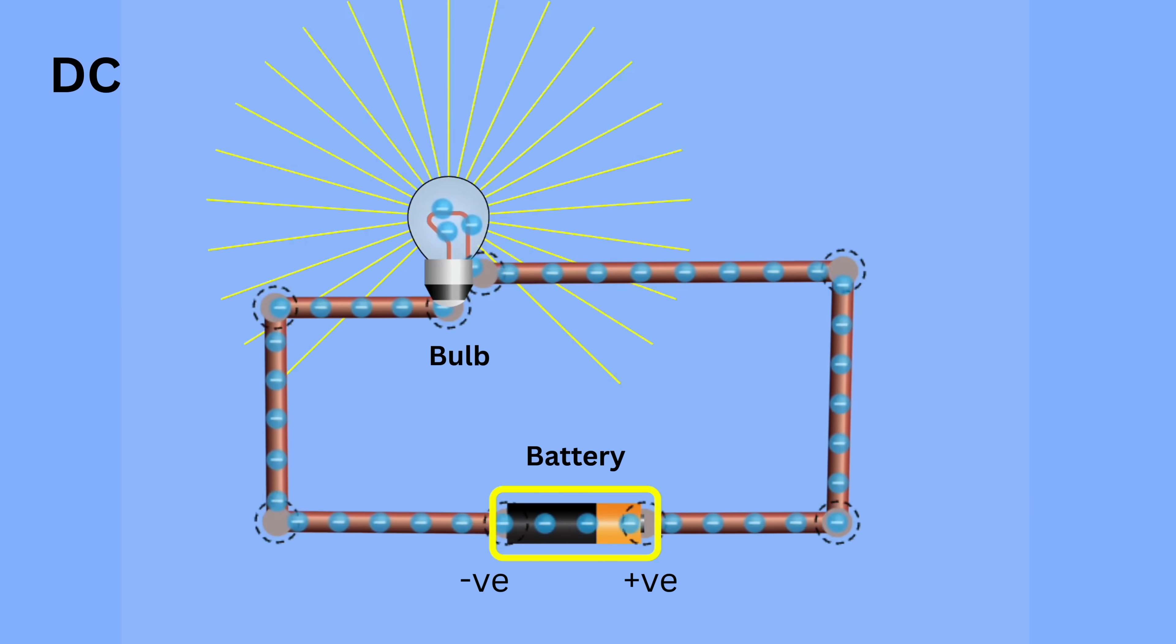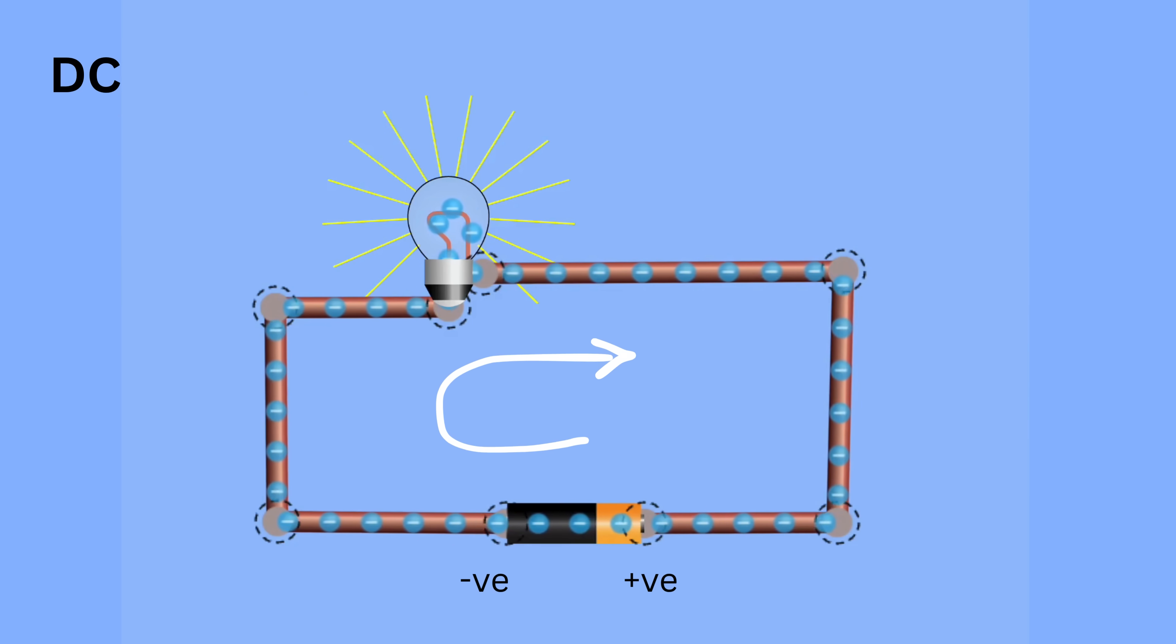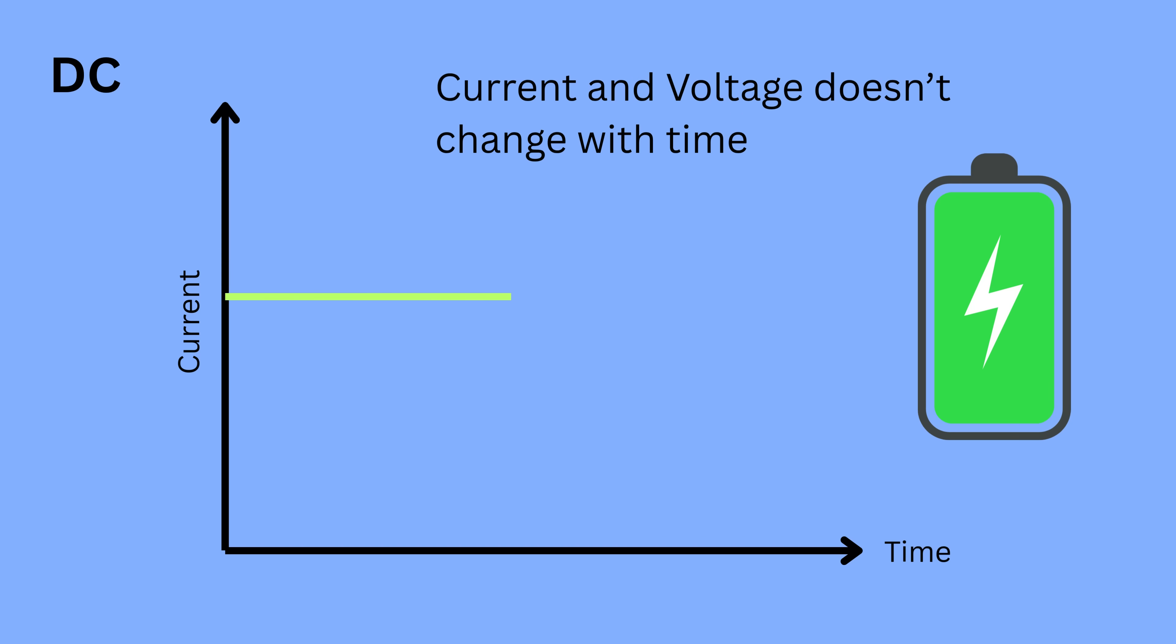The important thing is that the direction of flow never changes. The electrons always move from the negative terminal to the positive terminal, no matter how weak the current becomes. The graph can sometimes start as a straight horizontal line when the battery is full and might slowly slope downward as the battery drains, but it will never flip below the axis or change direction.